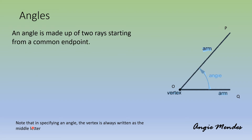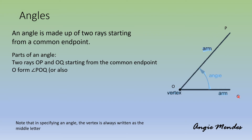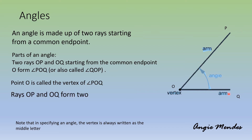Now let us see what are angles, or how are angles formed. An angle is made up of two rays starting from a common end point. Two rays OP and OQ starting from the common end point O form angle POQ. This angle can also be named QOP. Point O is known as the vertex of angle POQ — it is the common point where the rays are meeting. Rays OP and OQ form the two sides of angle POQ, also known as the arms of the angle.